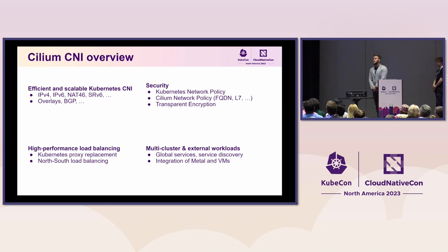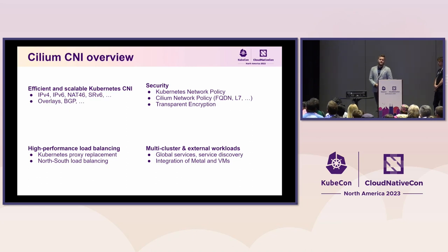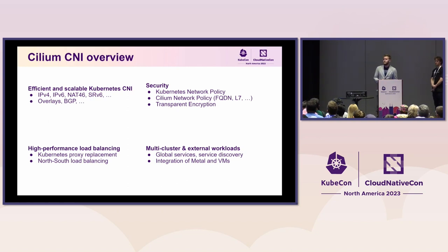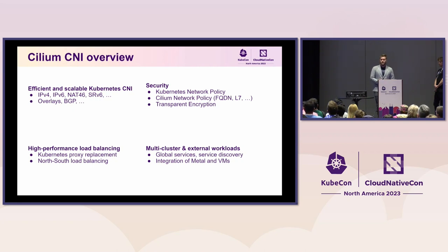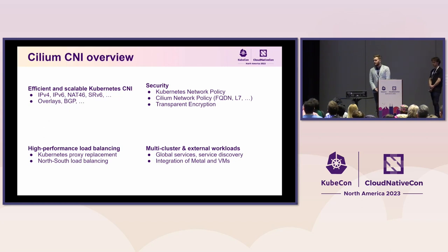We'll be focusing today mostly on Cilium CNI. In summary: it is an efficient, scalable Kubernetes CNI that also provides security — Kubernetes network policies as well as more advanced Cilium network policies. It also provides service load balancing, so if you are interested in kube-proxy replacement, you can use Cilium for that. Last but not least, it supports multi-cluster: if you're running multiple clusters and need connectivity between them, you can utilize Cilium as well.